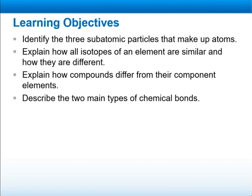Our learning objectives for this lesson: identify the three subatomic particles that make up atoms; explain how all isotopes of an element are similar and how they are different; explain how compounds differ from their component elements; and describe the two main types of chemical bonds.